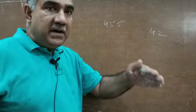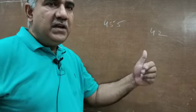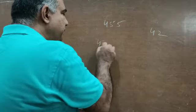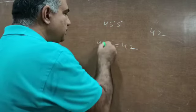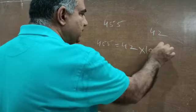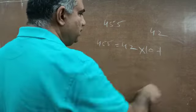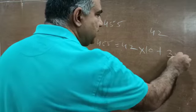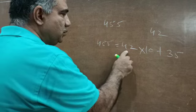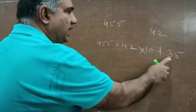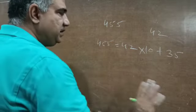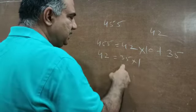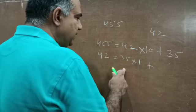Using Euclid's Division Lemma for the given quantities — dividing them according to those rules and then finding HCF — that process becomes Euclid's Division Algorithm. So writing 455 and 42: dividing 455 by 42 gives quotient 10 and remainder 35. So a is equal to bq plus r, and r is less than the divisor. Now writing 42 and 35: dividing 42 by 35 gives quotient 1 and remainder 7.